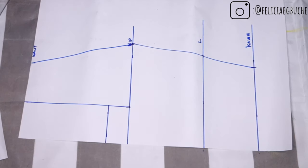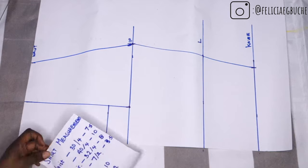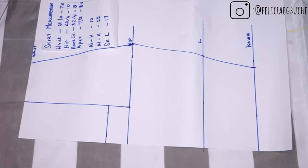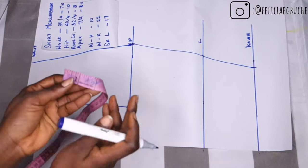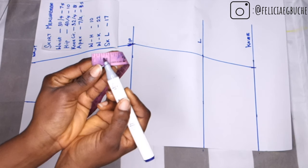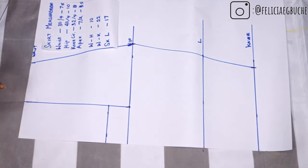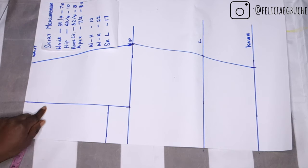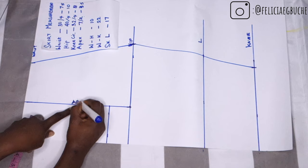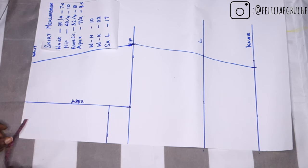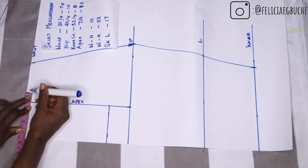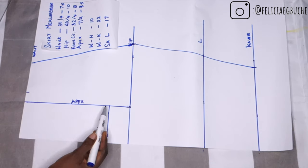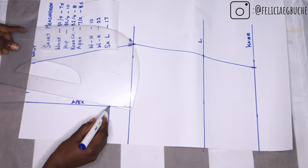For the dart, depending on your hip measurement: for a hip that is 40 inches and above we use a one-inch dart, and for a hip less than 40 inches we use 6/8 — which is three-quarters of an inch. In my case the hip is 40 inches, so I'm using one inch for the dart. From the apex line I mark one inch, and then I connect that one inch to the dart point using a ruler.